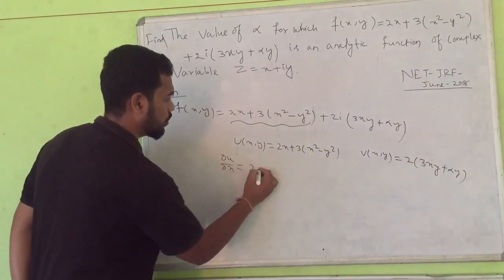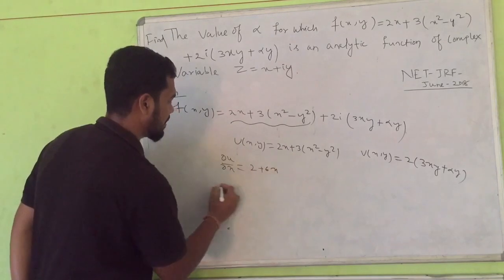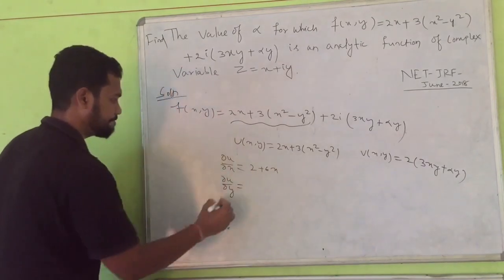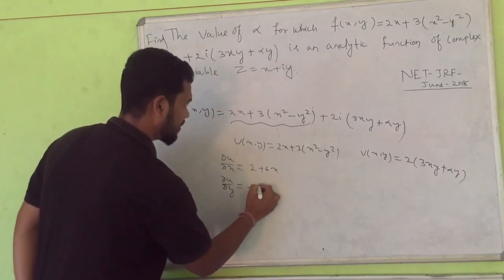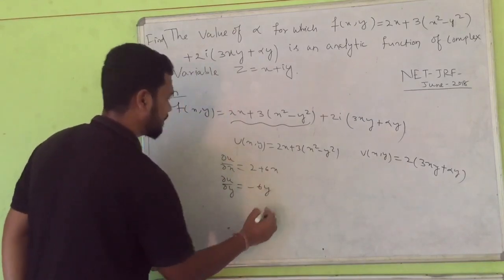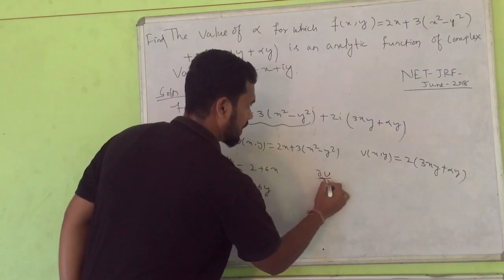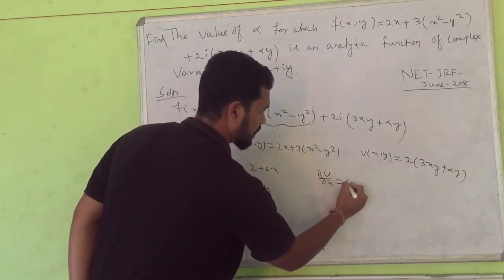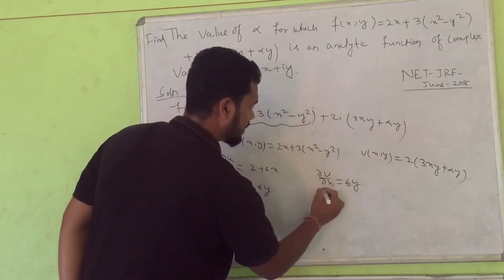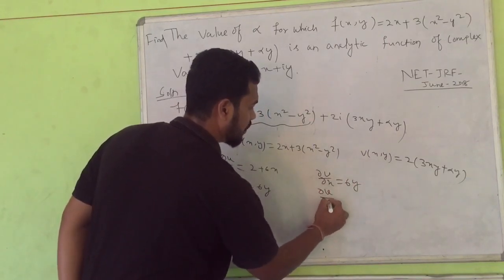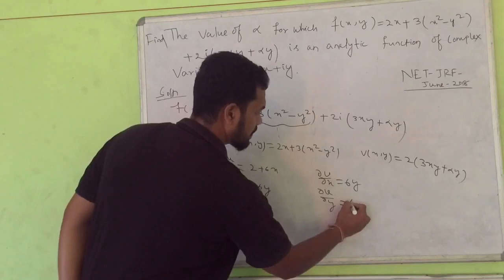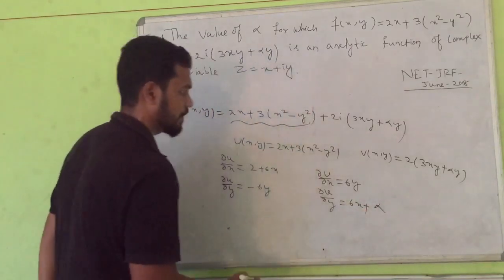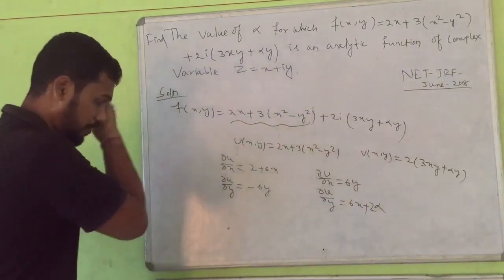Let's find del u upon del x - you will get 2 plus 6x. Del u upon del y, you will get minus 6y. Then del v upon del x equals 6y and del v upon del y equals 6x plus 2 alpha.